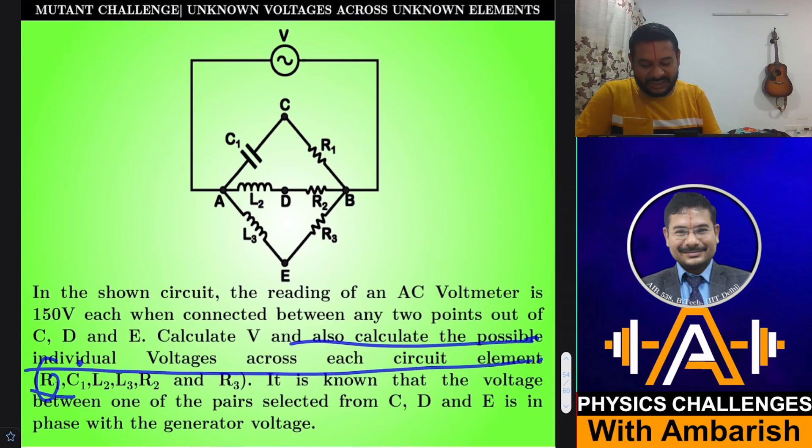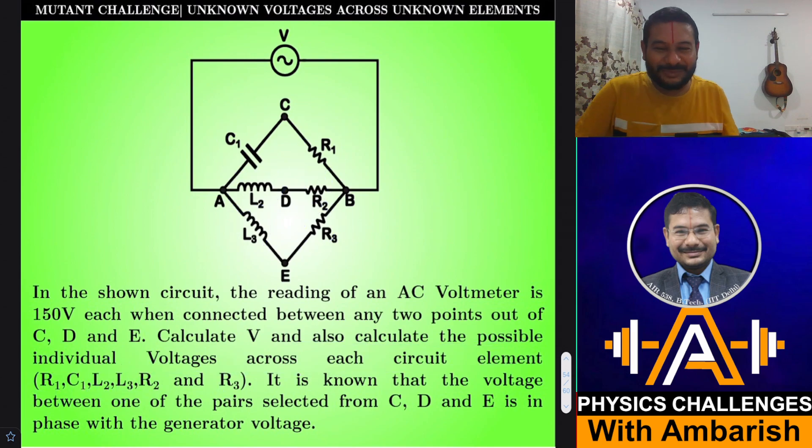Calculate V. We have to find the generator voltage based on this information, and also calculate the possible individual voltages across each circuit element: R1, C1, L2, L3, R2, and R3. Just one number in the entire problem and you are supposed to comment on so many other numbers.